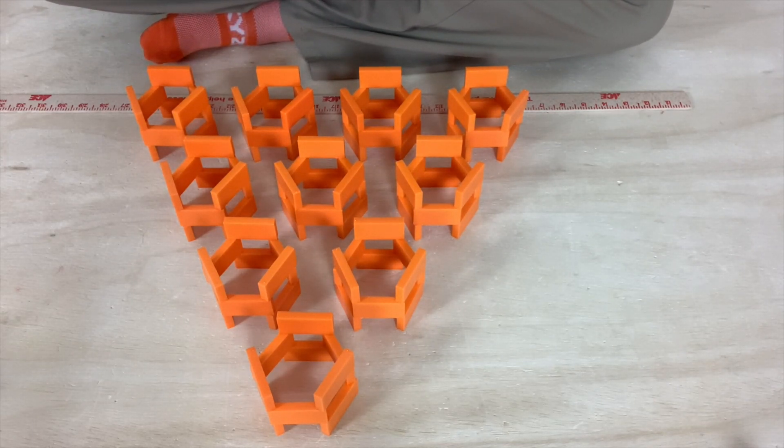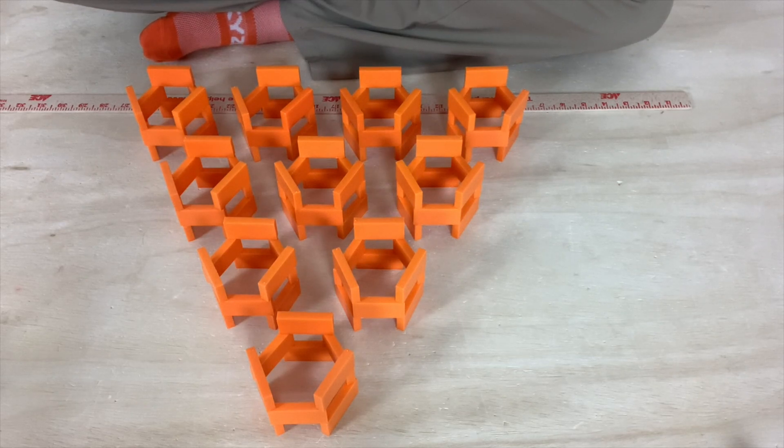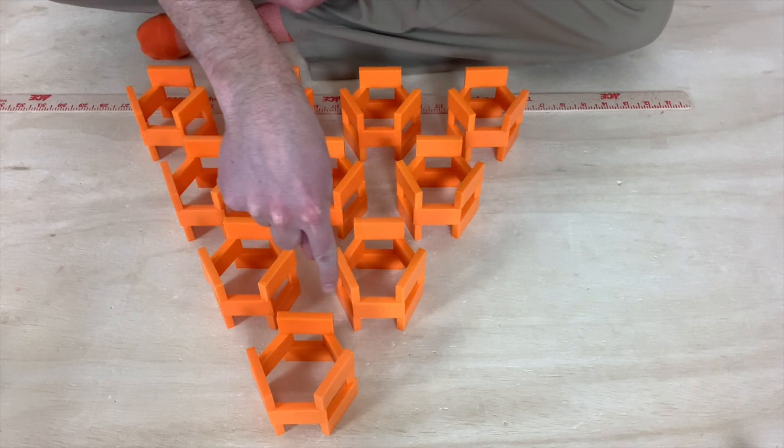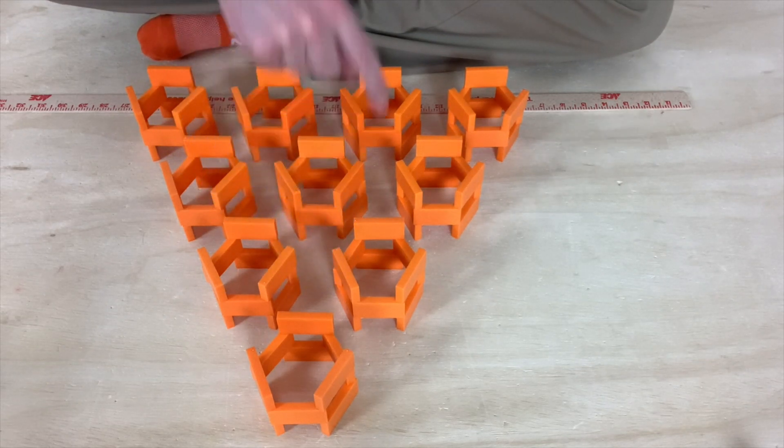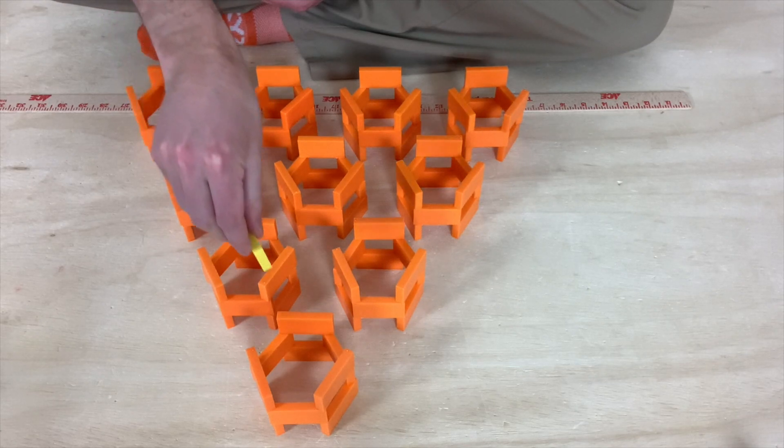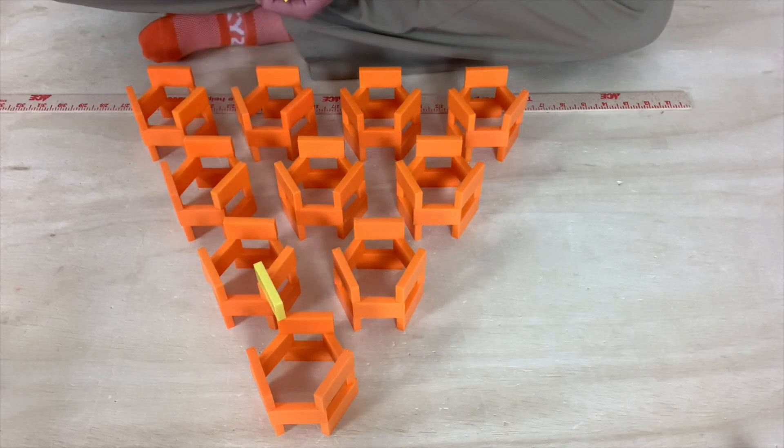And the key is to notice that the space in between the hexagons that we built is also a hexagon, so we want to build a hexagon over it like this.